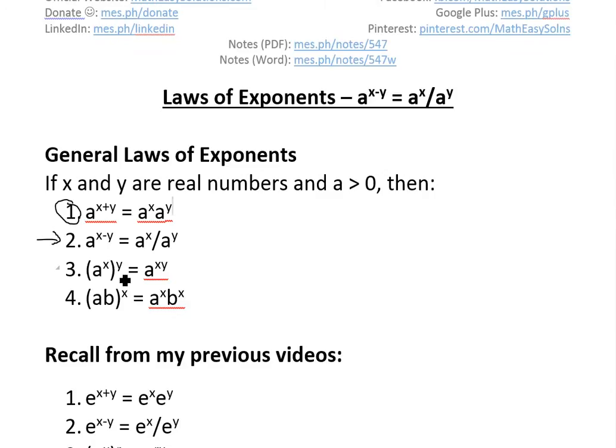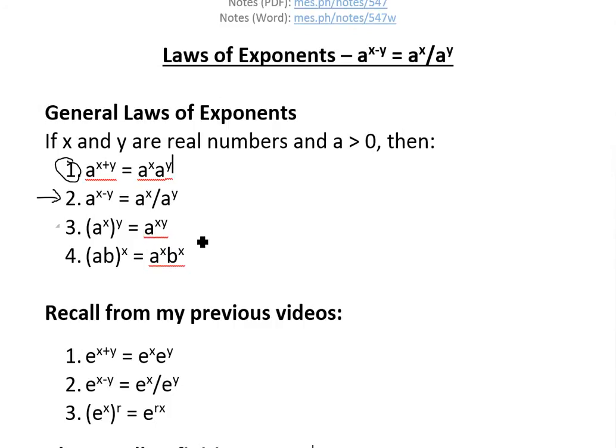Basically the third one is (a^x)^y, the same thing as writing a^xy. I'll prove these in later videos. In this one (ab)^x equals a^x times b^x.